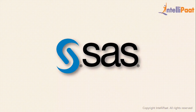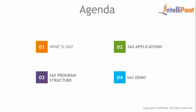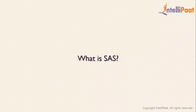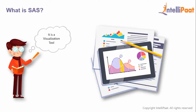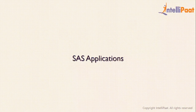Welcome to yet another interesting session by IntelliPath. We'll start off by understanding what SAS is, then look at some applications of SAS, followed by the SAS program structure, and finally head on to the demo part. SAS stands for Statistical Analysis System, and with it we can perform analytical operations like time series analysis, predictive modeling, and data management. SAS is also a visualization tool — we can create beautiful graphs and build stunning dashboards to represent analyzed data.